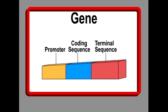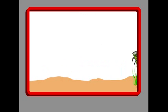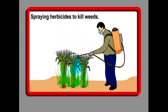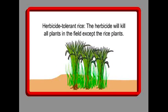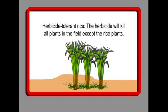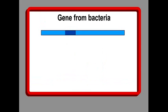Genes contain the information for making a specific product, usually a protein. A gene is made up of a promoter, a coding sequence, and a terminal sequence. Let's imagine that a big pesticide company wants to make a rice plant tolerant to one of its pesticides — in this case, a herbicide or weed killer. This means the herbicide will kill all other plants in the field except the rice plant. We need to look for an organism that is tolerant to this particular herbicide and isolate the tolerance gene in it.